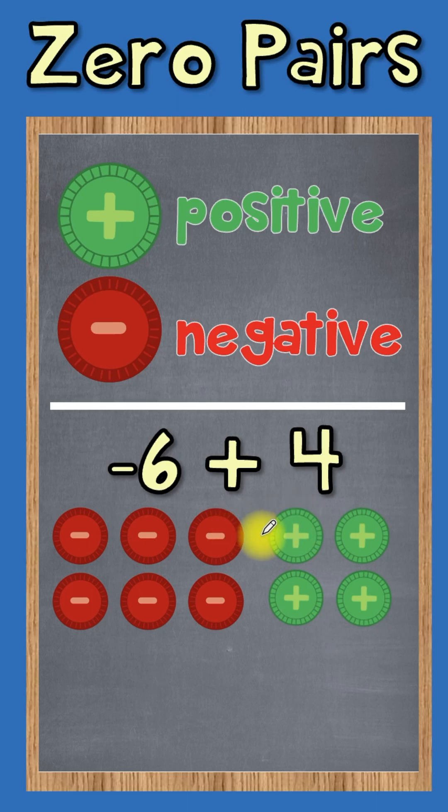When we have a pair of counters where one is green and one is red, that cancels out making a zero pair.